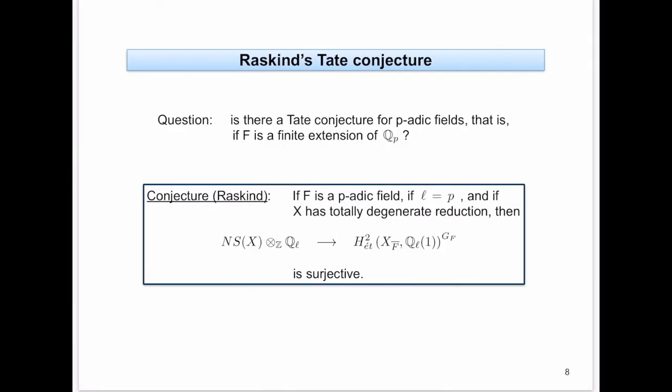After this preparation, Raskind asked: is there a version for p-adic fields? That is, if F is a finite extension of Q_p. Of course Q_p is not finitely generated over its prime field Q — it's far from finitely generated. Nevertheless, the p-adics is a sort of arithmetic field, so maybe there is some version. Raskind conjectured: suppose you have a finite extension of the p-adics, let L equal P, and assume you have a smooth and proper variety with totally degenerate reduction. Then this map is surjective.